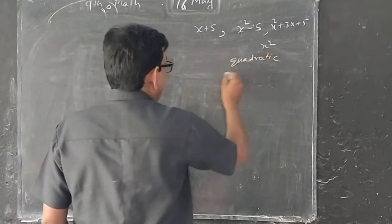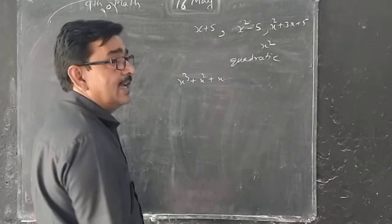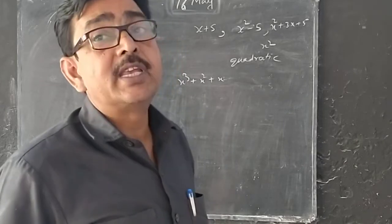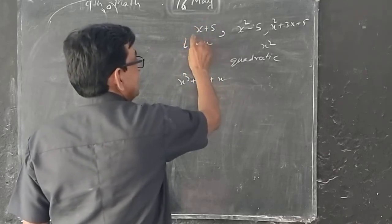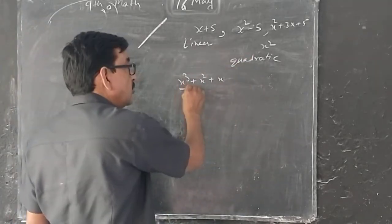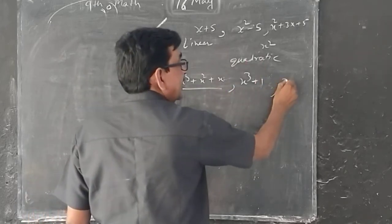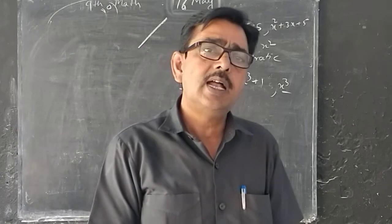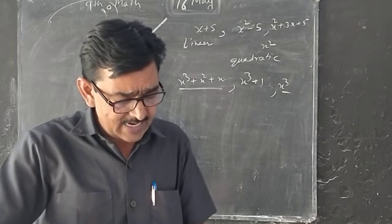Cubic is power 3. X cubed plus x square plus x. So expression with degree 3 is called cubic expression. Two degrees is quadratic, one degree is linear. If the graph is drawn by a line, its relation is linear. Quadratic will be square, the second degree. The biggest power is 3, so it is cubic polynomial. So this is your work, you have to do this.